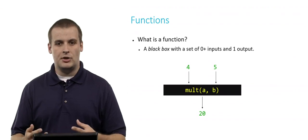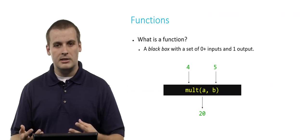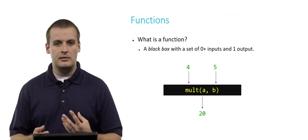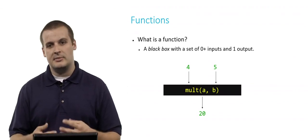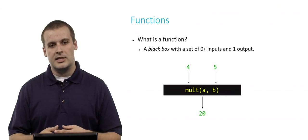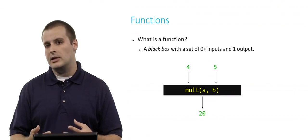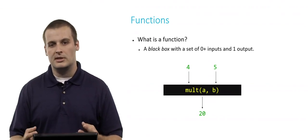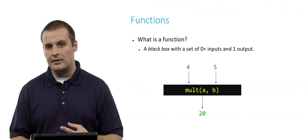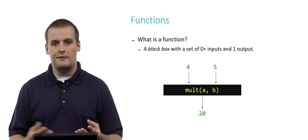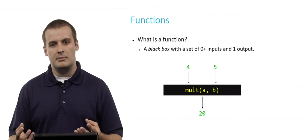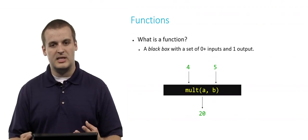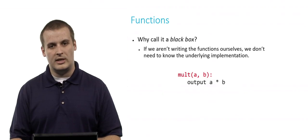Similarly, you have a function called 'mult' that takes two inputs a and b, and processes them such that the output of the function is the product of the two inputs — the two inputs multiplied together. Four and five being passed into mult, something happens, and the output we expect is 20.